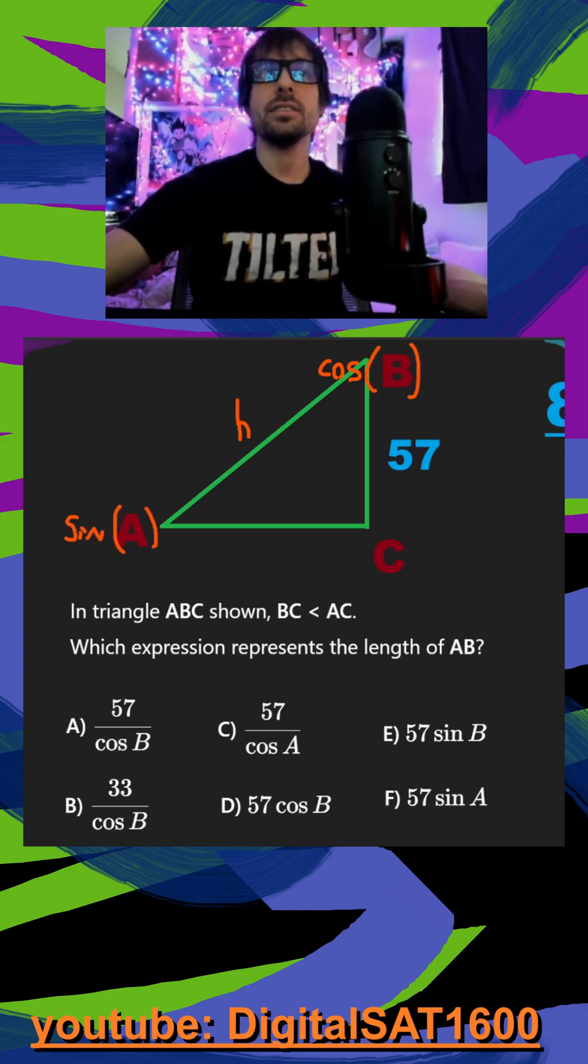So we can calculate each of these and see which one matches one of our answers. In the sine of A here, we have opposite, which is 57, divided by hypotenuse, which is H. I would multiply both sides by H. It would cancel out my denominator. And our final equation for sine of A, or for H, is going to be 57 divided by sine of A.